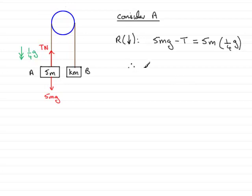So all we need to do is just tidy this up. We can just rearrange this. If we add T to both sides and subtract this term from both sides, we've got T equals 5mg minus 5 times a quarter, so that's going to be 5 quarters mg.